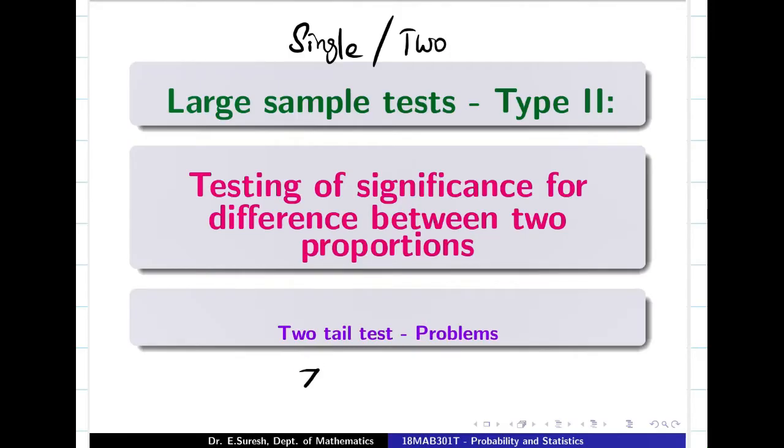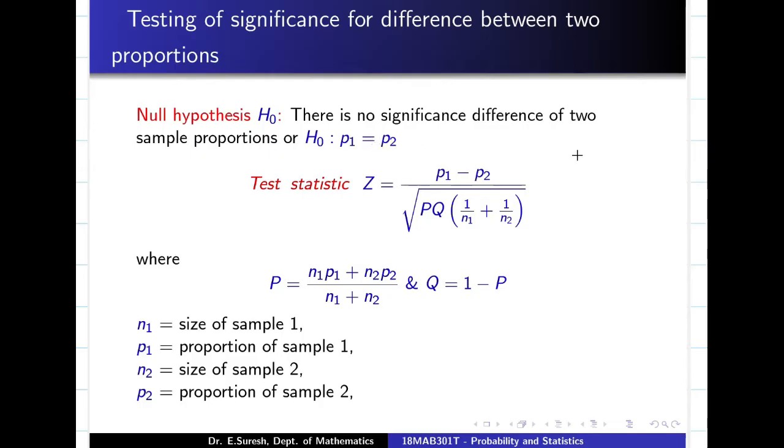For the single proportion, just a recap. You remember the formula for the single proportion: N is the sample size, small p represents proportion for the sample and capital P represents proportion for the population. When the case of difference between two proportions, I am going to take P1 as the proportion of sample 1, P2 as the proportion of sample 2, and corresponding N1 and N2 are the size of sample 1 and 2. So we are comparing two proportions. My formula is going to change like this: Z equals P1 minus P2, and since we have two different samples, it is going to be 1 by N1 plus 1 by N2.